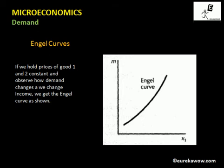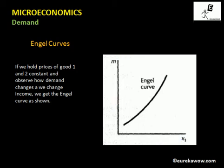Engel curves show how demand changes as income changes while holding prices constant. We plot the quantity demanded of good one against income, and we see that it is upward sloping — as income is increasing, the quantity demanded of good one is increasing, indicating that good one is a normal good. Therefore, for normal goods the Engel curves are upward sloping. However, Engel curves are not always upward sloping.